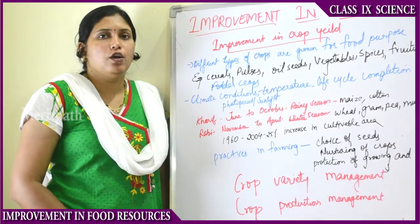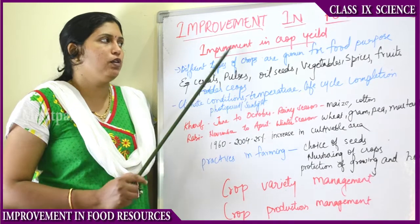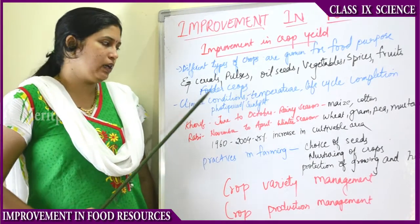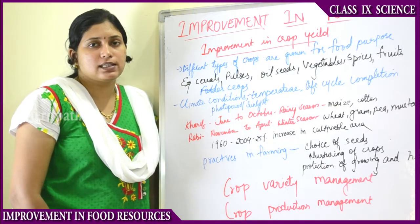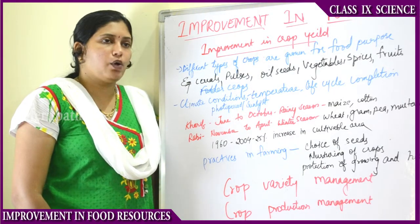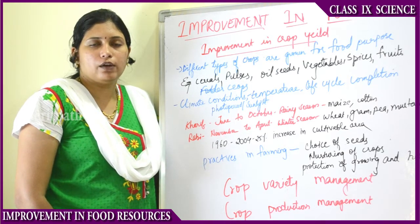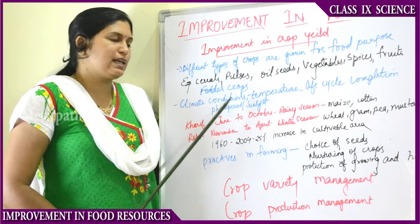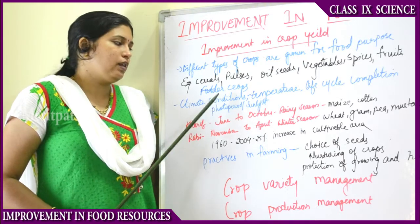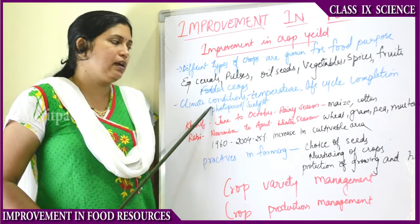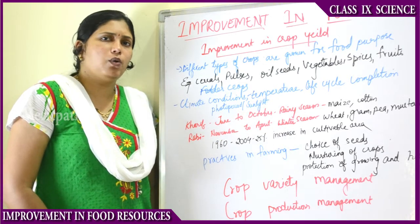Fodder crops like oats are food for animals. For all crops to grow properly, climatic conditions should be good. If there is excessive rainfall, excessive summer, drought - which is no rainfall - or excessive frost and snow, all this will affect crop production. So climatic conditions need to be good.